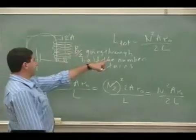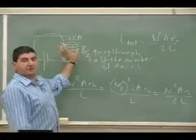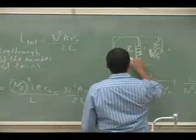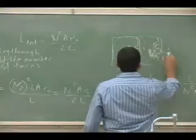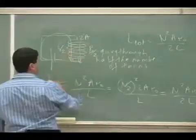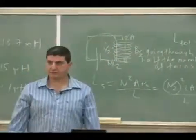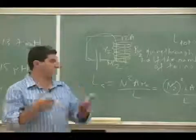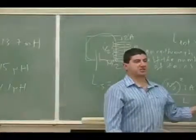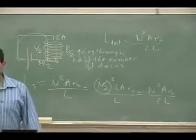So two solenoids placed in parallel act as one solenoid with everything cut in half: B/2, i/2, and n/2. The equation predicts the same answer as adding them in parallel. The solenoid inductance formula L = n²μ₀A/L therefore makes sense — both the series and parallel cases are consistent with it.